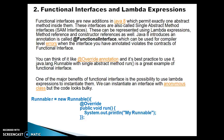Java 8 introduces an annotation called @FunctionalInterface, which can be used for compiler level errors when the interface you have annotated violates the contract of a functional interface. You can think of it like the @Override annotation in core Java. It is best practice to use it. Java.lang.Runnable with its single abstract method called run is a great example of a functional interface.